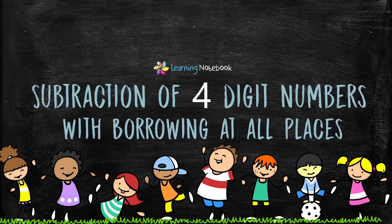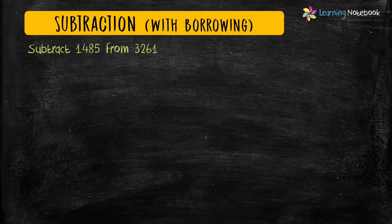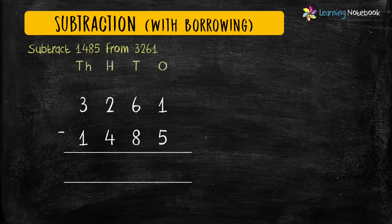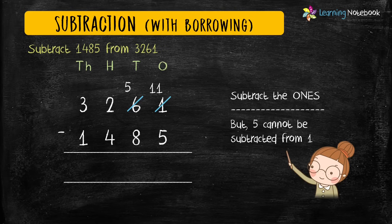Now let's learn subtraction of four-digit numbers with borrowing at all the places. The question is: subtract 1485 from 3261. Let's first write them in columns. Now subtract the digits at ones place. But 5 is bigger than 1, so 5 cannot be subtracted from 1. Let's borrow 1 from 6, so 6 becomes 5 and 1 becomes 11. Now we can subtract: 11 minus 5 equals 6.